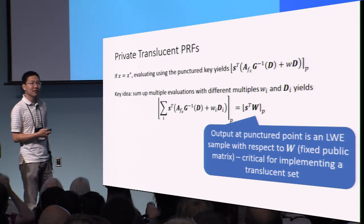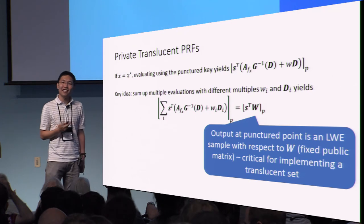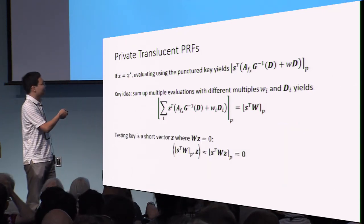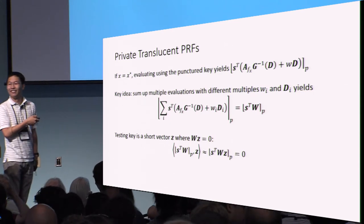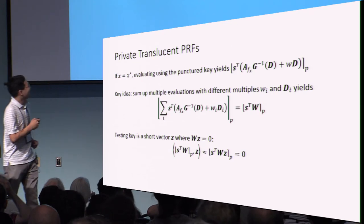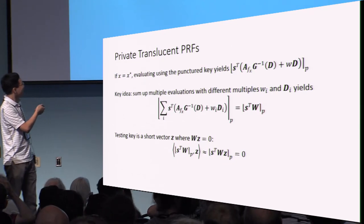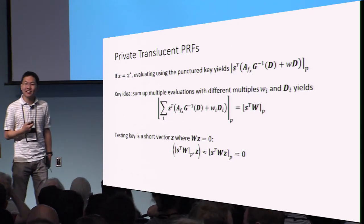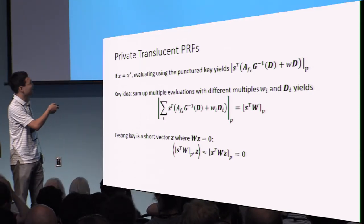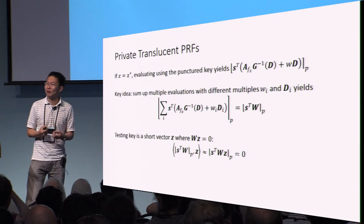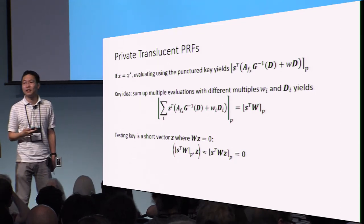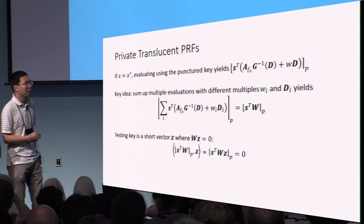Moreover, the fact that our samples have this particular structure means it's actually very easy to test whether we're in this subspace or not. The testing key is a short vector Z such that W times Z equals zero. To test whether an element is in this subspace, we simply take the inner product with this short vector Z and check if it is short or not. This allows us to achieve a private translucent PRF from the LWE assumption.